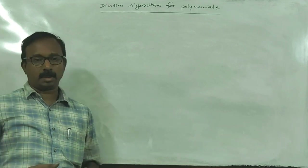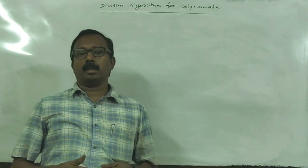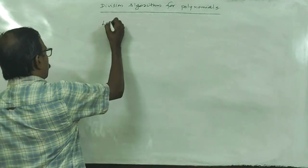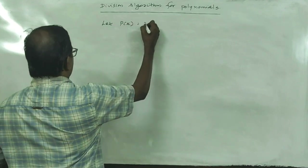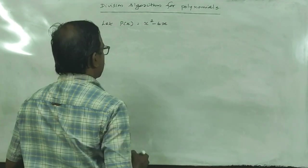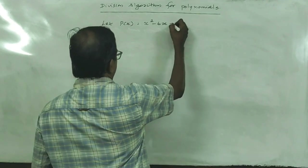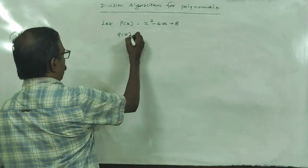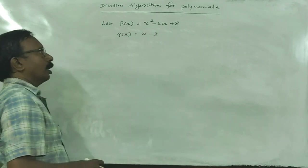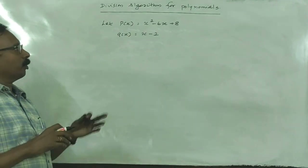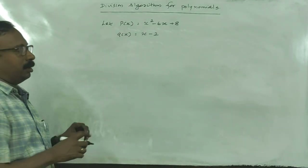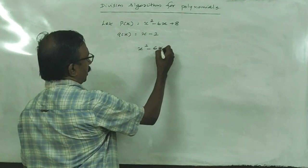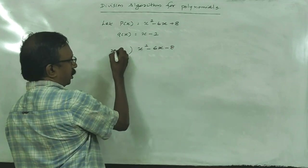Just like numbers, we can divide a polynomial into another polynomial. Let p(x) = x² - 6x + 8 and g(x) = x - 2. We can divide polynomial p(x) by g(x). So we have x² - 6x + 8 divided by x - 2.